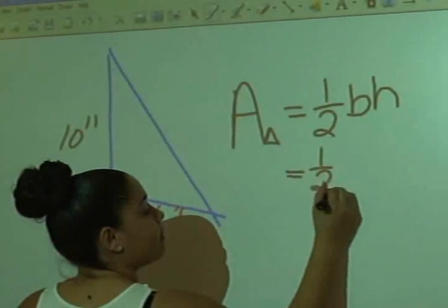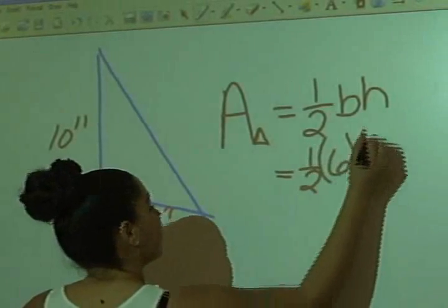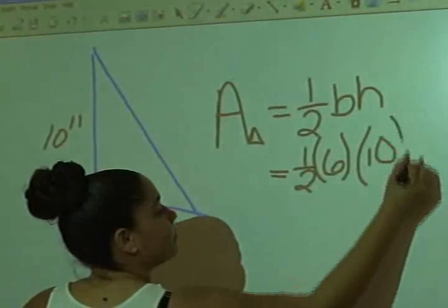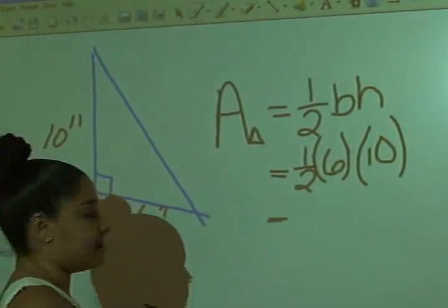So we have one-half times six times ten. Six times ten is? Sixty.